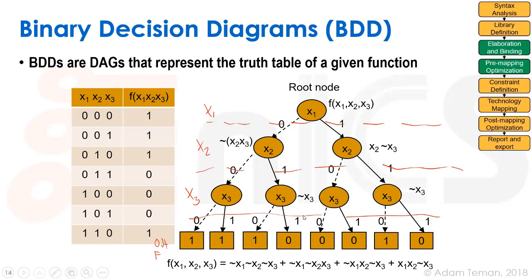Let's take an example: the input line 0, 1, 0 equals 1. x1 equals 0, so we go down here; x2 equals 1, so we go down here; x3 equals 0, so we go down here, and we see that the value of f is 1. Another example: the last line 1, 1, 0 gives an output of 1 — starting with 1, 1, 0, the output is 1 as expected. It's very easy to map a truth table exactly to a binary decision diagram.